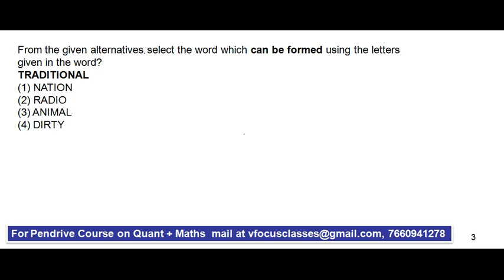The first question: from the given alternatives, select the word which can be formed using the letters given in the word TRADITIONAL. The question will have a given word and four options. You need to find out the word which can or cannot be formed using the question word. Go through the options and check each and every letter. Take the first option — if all its letters are found in the given word, you can form it.